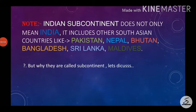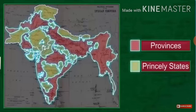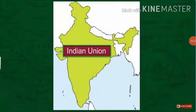The Indian subcontinent does not only mean India. It includes other South Asian countries like Pakistan, Nepal, Bhutan, Bangladesh, Sri Lanka and Maldives. India is called a subcontinent because of its vastness and distinct physical and cultural identity. Before 1947, there were two types of states in India — the provinces and the princely states. Provinces were ruled directly by British officials appointed by the Viceroy. Princely states were ruled by local hereditary rulers who acknowledged sovereignty in return for local autonomy. After independence, these princely states merged into the Indian Union.